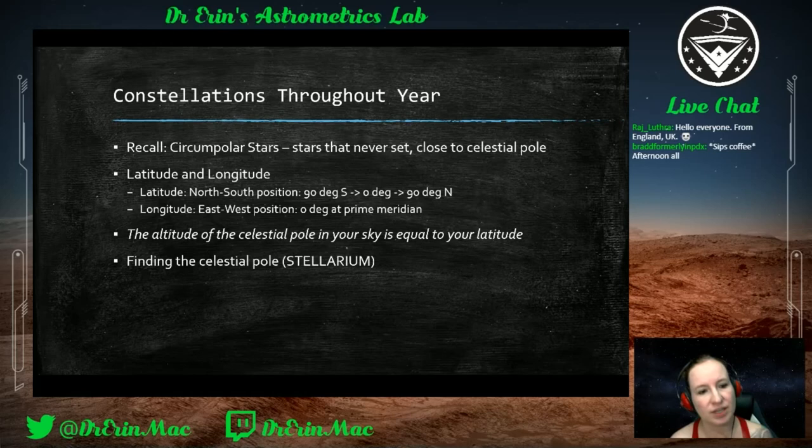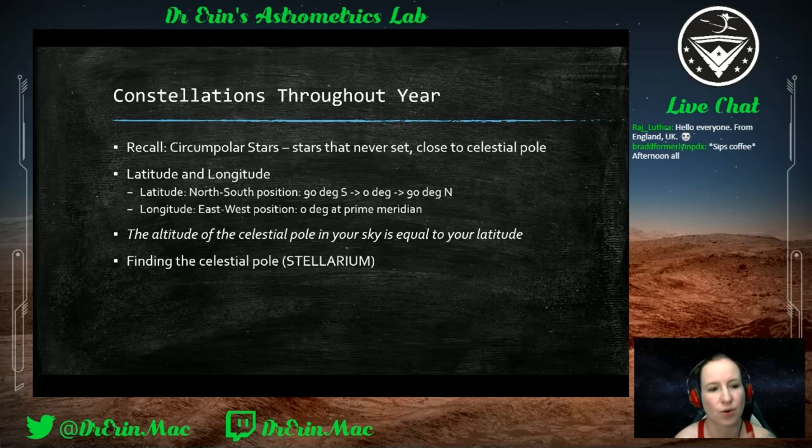Remember we talked about circumpolar stars — the ones that never set. If you can see the celestial pole, you'll see these stars orbit it. I'll pull up Stellarium after this slide so we can see those stars going around. We also talked about latitude and longitude on Earth.